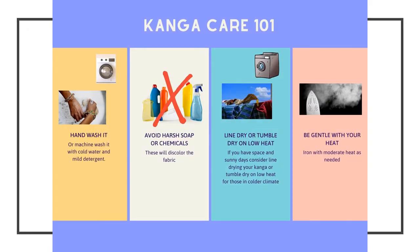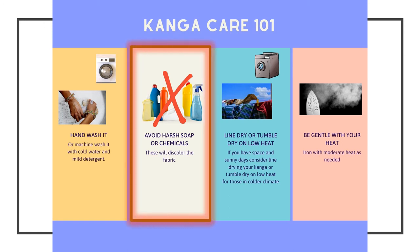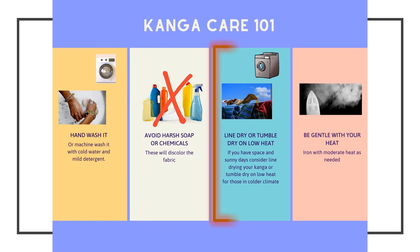Once you own your pair of Kanga, the next logical question will likely be: how do you take care of your Kanga to preserve its quality and longevity? Here's what I do: hand wash or machine wash with cold water and mild detergent. Avoid harsh soap or chemicals that will discolor the fabric. If you have sunny weather, consider line drying your Kanga. If you live in a colder climate, tumble dry on low heat. This will help the longevity of your fabric and its vibrant colors.